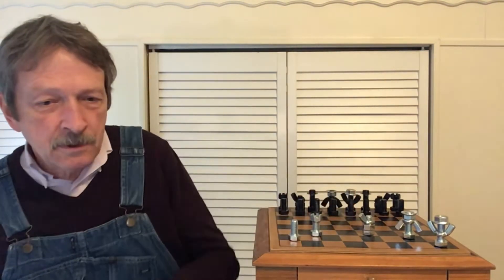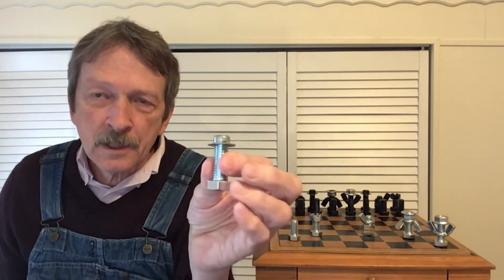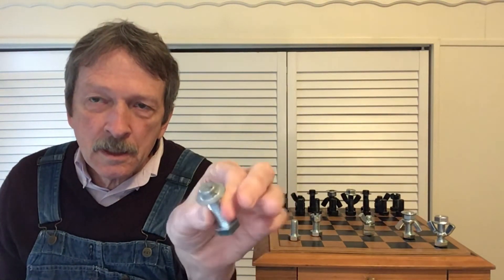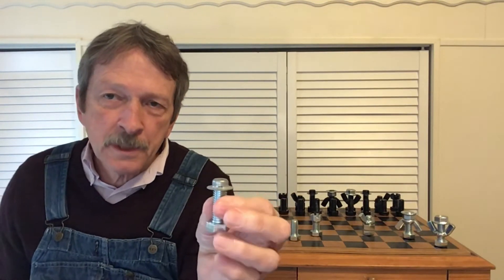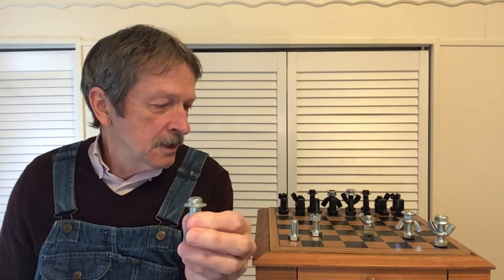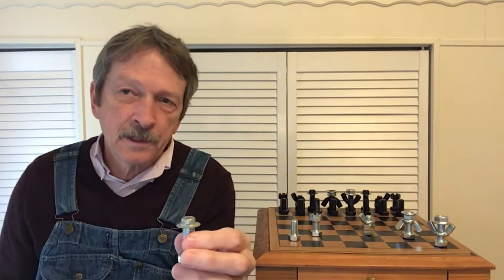And then next in order would be the bishop. He has a rather plain hat. But the bishop, he's a little taller than the pawn and the rook.